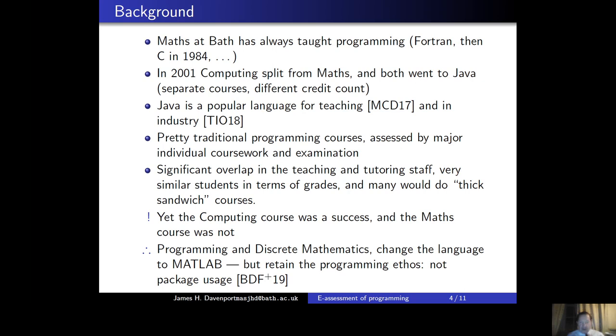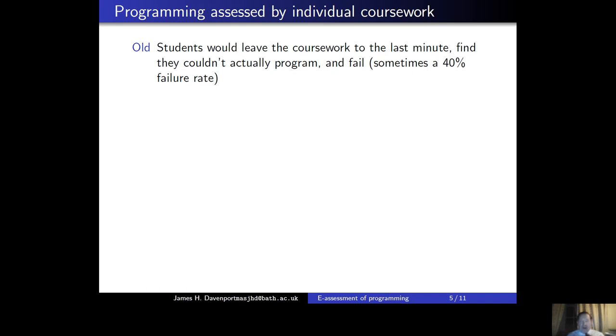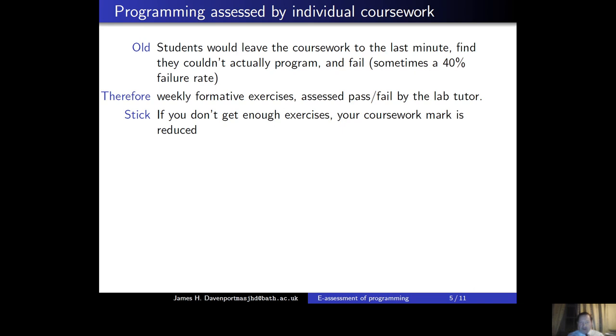So it was assessed by individual coursework. And in the old course, students would leave the coursework to the last minute, find they couldn't program and fail. And some years we had a 40% failure rate, which was painful and embarrassing and caused a lot of resits. They don't want that. So therefore, the solution, which I picked up from a colleague in Canada, was to have weekly formative exercises, which were assessed on a pass-fail basis by the lab tutor. Is it computing the right thing? And we set exercises such that it was easy for the lab tutor to verify that. The stick was, if you don't get enough exercises, your coursework mark is reduced. We did that for a few years to get enough data. So the carrot could be, the evidence was, if you don't do the exercise, you fail the coursework. No one who did not complete at least half of the exercises ever passed the course. And that actually works quite well. So we've dropped the stick now.